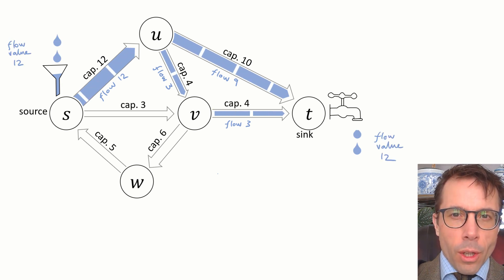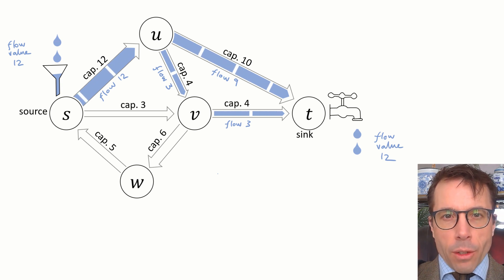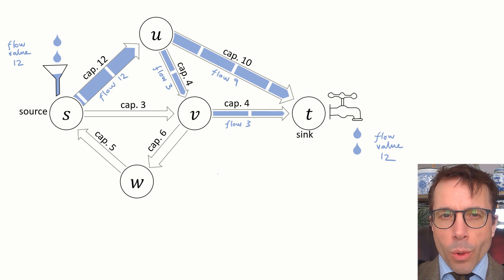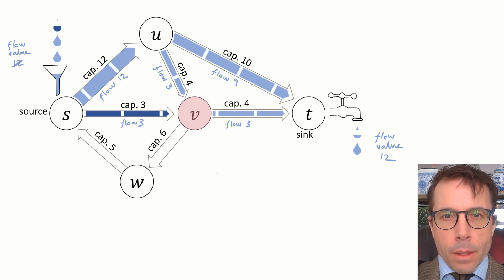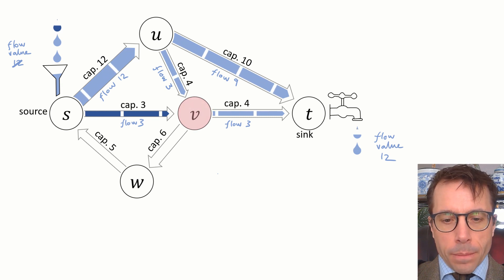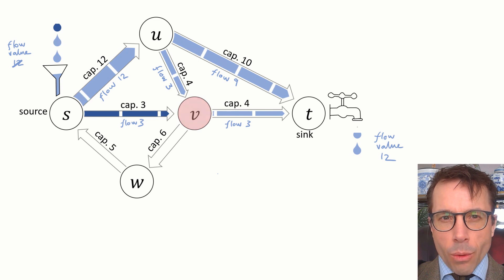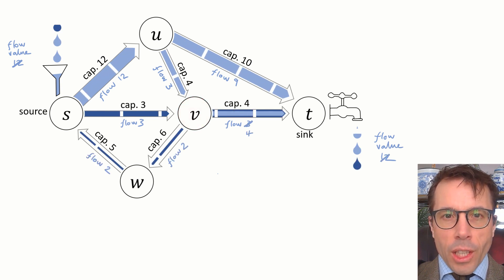There's 12 coming in at the source, and there must be 12 being tapped out at the sink. Could we pump any more from the source to the sink? Well, we can fit more on the S to V pipe. Let's try to send 3 more units that way. Now there's an excess at V. What do we do with it? We could send some to T using the pipe, which isn't yet at full capacity.